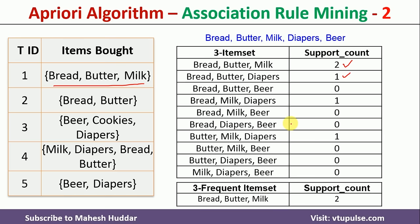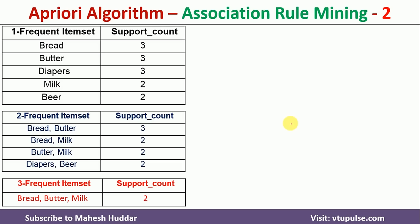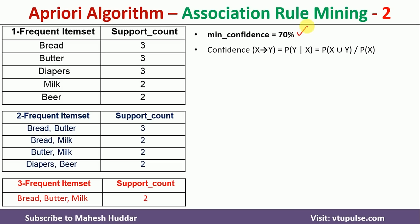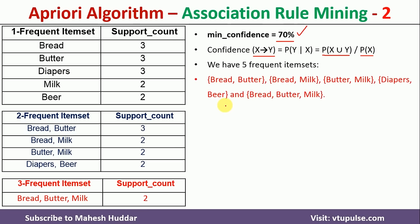Now we need to write the association rules and select only the strong rules based on the confidence percentage. The minimum confidence given is 70%. The confidence of a rule X → Y equals the number of times both products were bought together, divided by the number of times X was bought. I have listed all the frequent itemsets: four 2-frequent itemsets and one 3-frequent itemset.